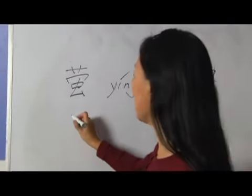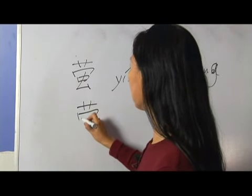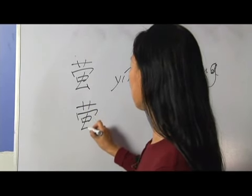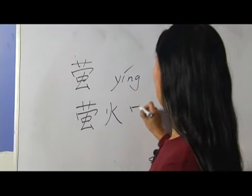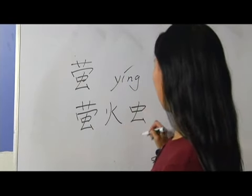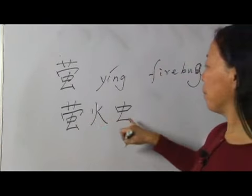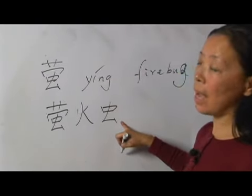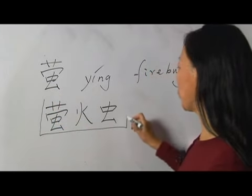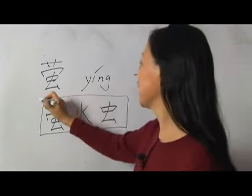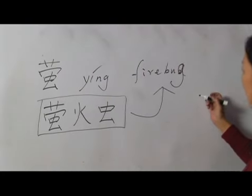We say yíng huǒ chóng. Huǒ means fire, flame. Chóng means insect, worm. So yíng huǒ chóng is firebug.